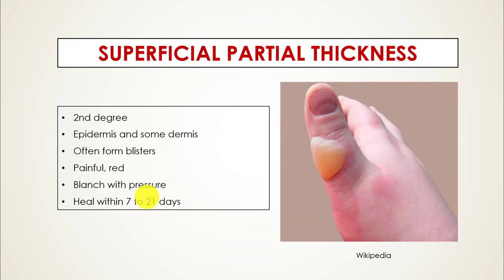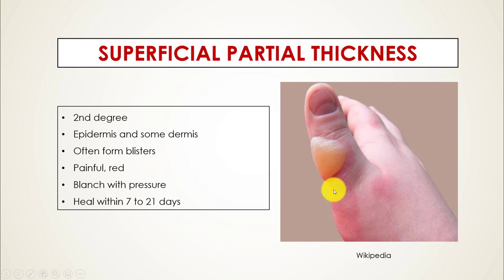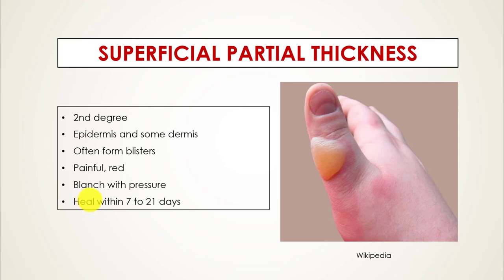Superficial partial thickness burns are what used to be called second degree burns. They involve the epidermis and some of the dermis. What makes them distinct from superficial burns is that they often form blisters. These burns are painful and red, and blanch with pressure — but it's really the blisters that make them distinct. They take a longer time to heal compared to superficial burns, usually about 7 to 21 days.